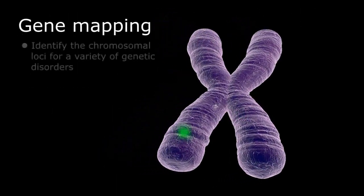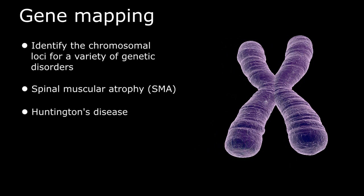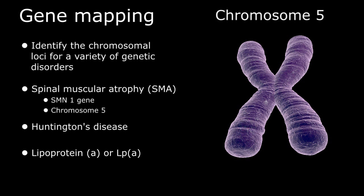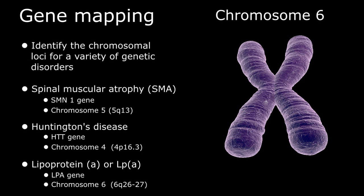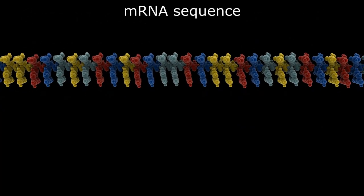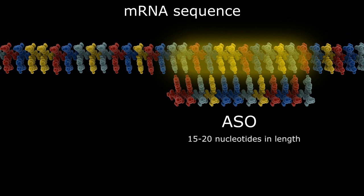Using gene mapping, scientists have been able to identify the genetic loci or location responsible for a variety of genetic diseases, such as spinal muscular atrophy, Huntington's disease, and lipoprotein A. For example, SMA is caused by a genetic mutation of the SMN1 gene located on chromosome 5 at locus 5q13. Huntington's disease is caused by a mutation in the HTT gene on chromosome 4 at locus 4p16.3. And lipoprotein A is caused by a mutation in the LPA gene on chromosome 6 at locus 6q26-27. Knowing the nucleotide sequence of these defective genes allows scientists to create a short strand of complementary or anti-sense RNA or DNA, about 15 to 20 nucleotides in length, that can bind specifically to regions of the mRNA molecule to either block or accentuate protein expression depending on the targeted segment of the pre-mRNA strand.